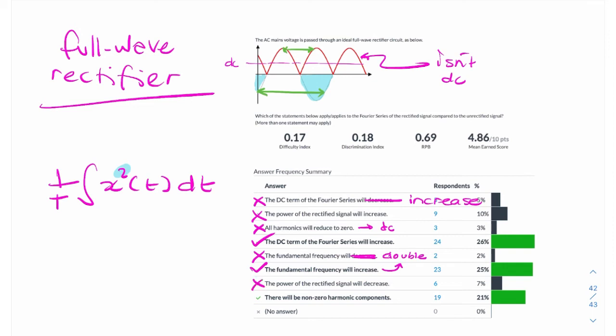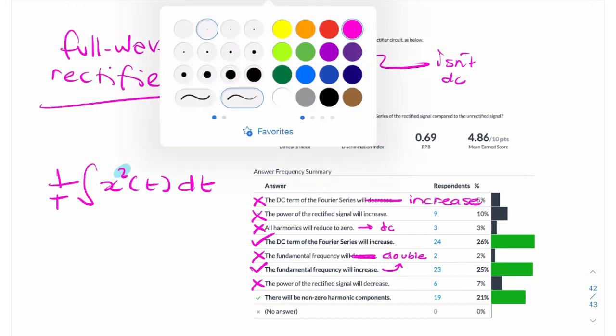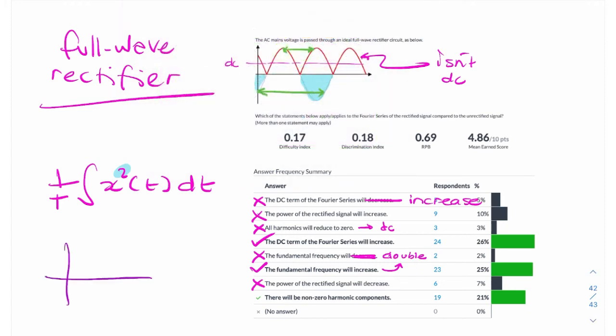There will be non-zero harmonic components. Now, what does that mean, non-zero harmonic components? So originally, our sine wave, our AC signal, had a spectrum that might have looked something like this. Zero at DC and then all harmonics greater than one are zero. So only one harmonic. But now we've rectified it by removing the lower half cycle.